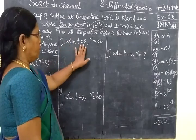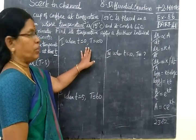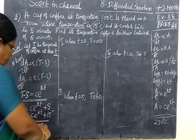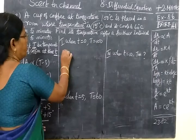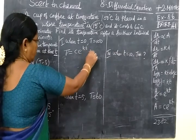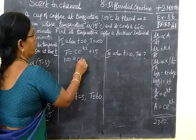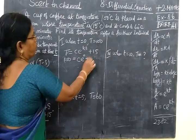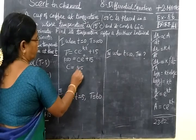The first condition: when time is equal to zero, the coffee temperature is 100 degrees. Substituting, we get T equal to C times e to the power kt plus 15, and solving gives C equal to 85.